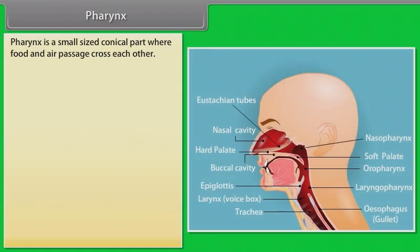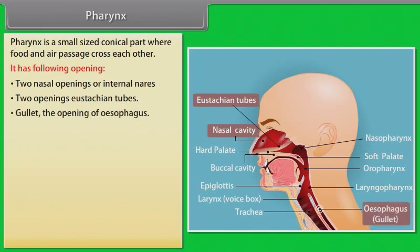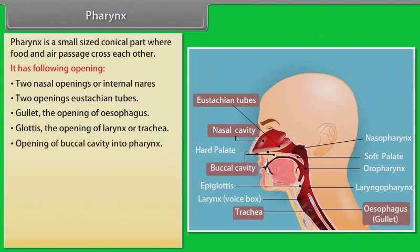The pharynx is a small-sized conical part where the food and air passages cross each other. It has the following openings: two nasal openings or internal nares, two openings of the Eustachian tubes, the gullet (opening of esophagus), the glottis (opening of larynx or trachea), and the opening of the buccal cavity into the pharynx.